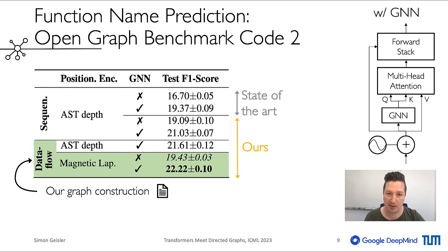We verify the efficiency of our positional encodings, as well as the importance of directed graphs in various tasks and on different architectures. For example, on the common Code2 dataset for function name prediction, we set a new state of the art.